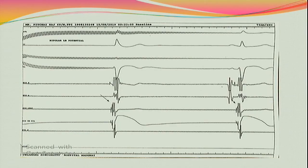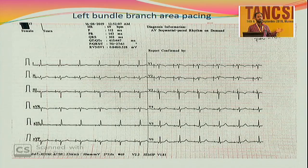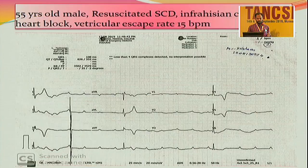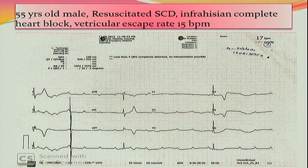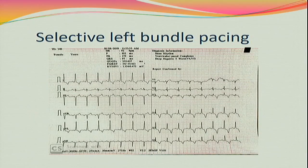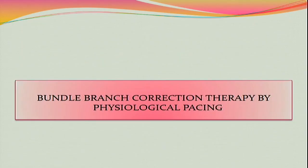You will be able to see a left bundle potential, just like seeing a His bundle potential with a His bundle catheter. This is the classical left bundle potential — it tells you that you are exactly on top of the left bundle, and your QRS will look like this: a duration of 102ms, which you can never achieve with RV pacing or BiV pacing. The concerns with His bundle pacing — lead dislocation, high threshold, and battery depletion — are overcome by left bundle pacing. In one highly symptomatic patient who came with cardiac arrest at heart rate 20, I chose left bundle pacing: threshold was 0.2V, battery life 10–12 years, excellent lead stability, and QRS of 97ms.